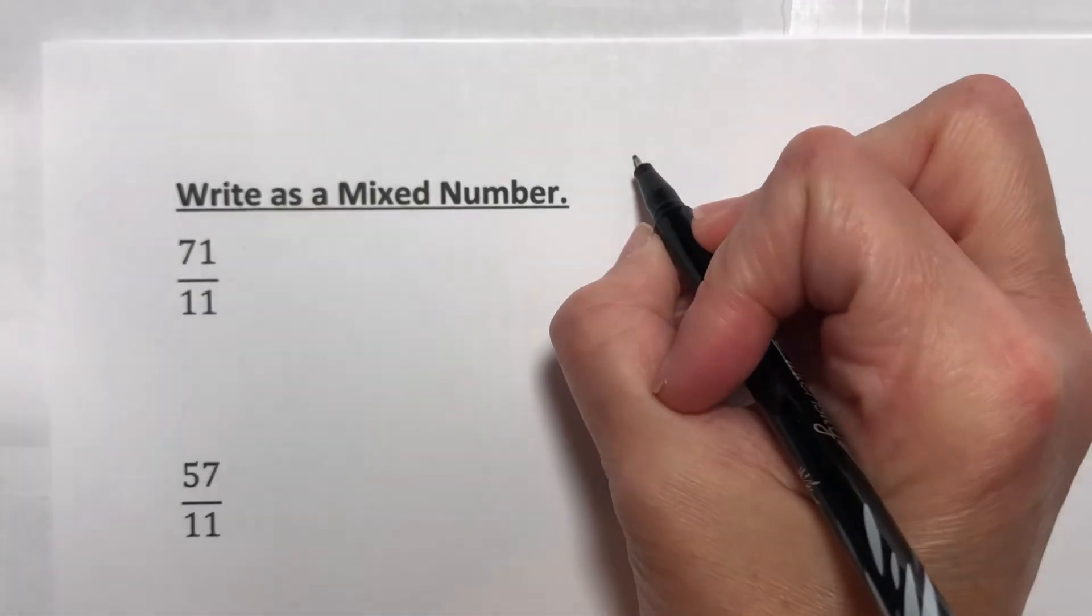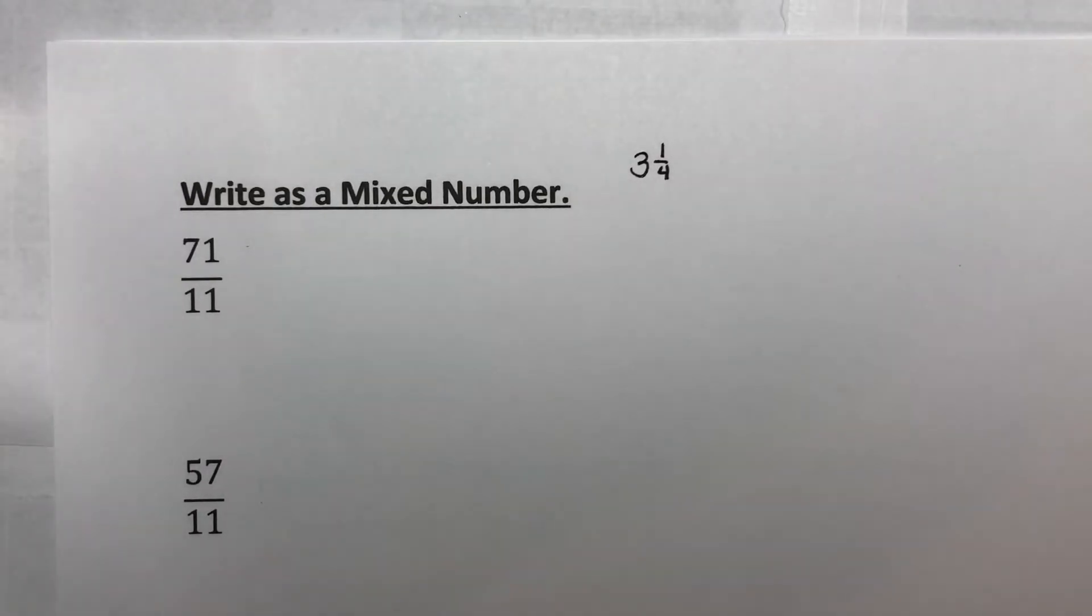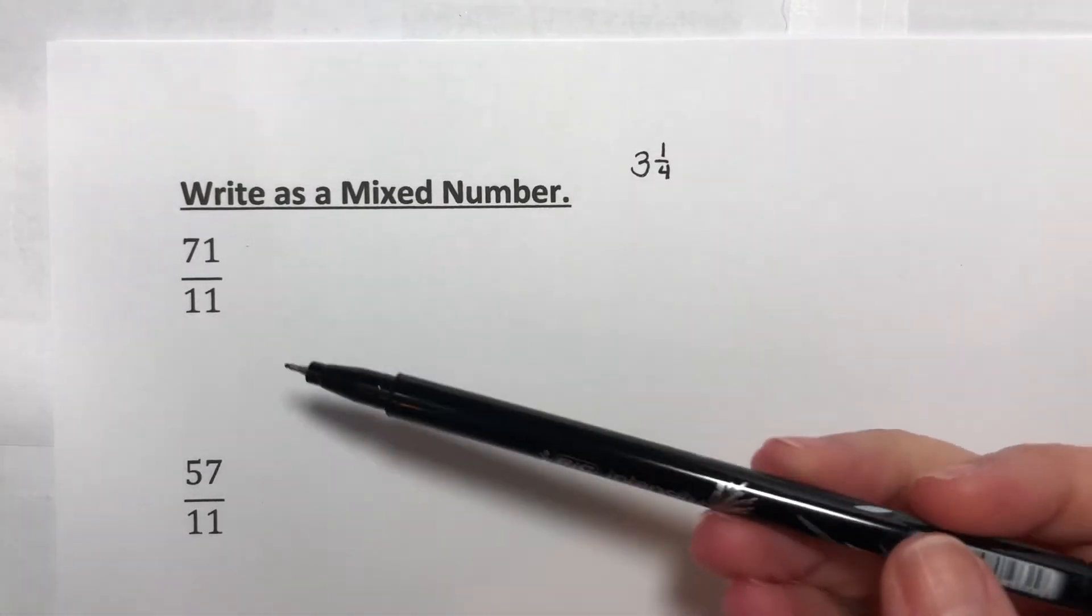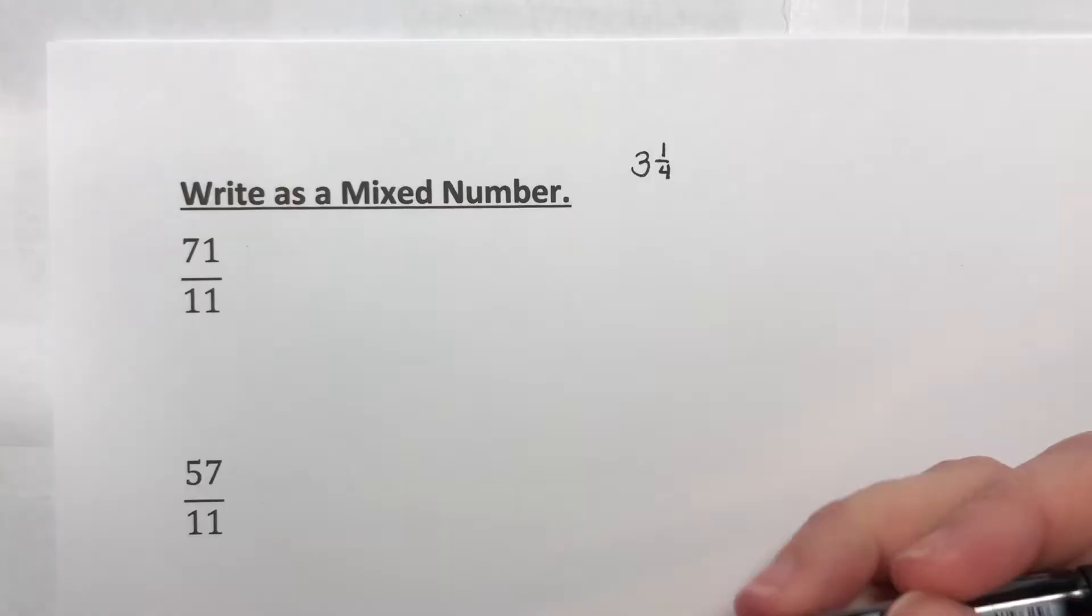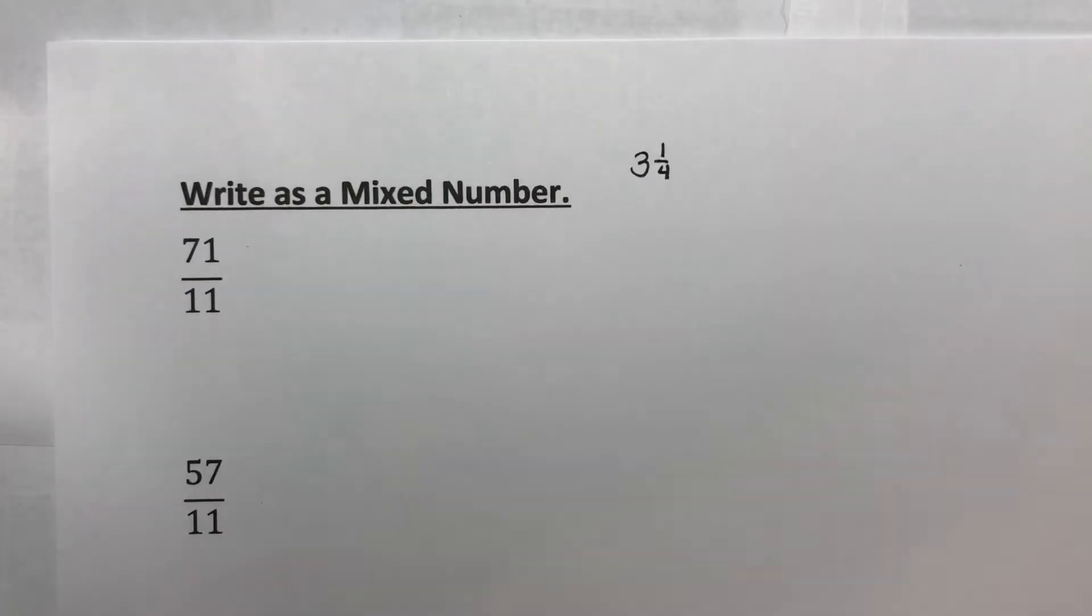Now a mixed number would be something like three and one-fourth. Remember that divisions and fractions are the same thing, and what we call fractions are usually just divisions that didn't work out nicely.